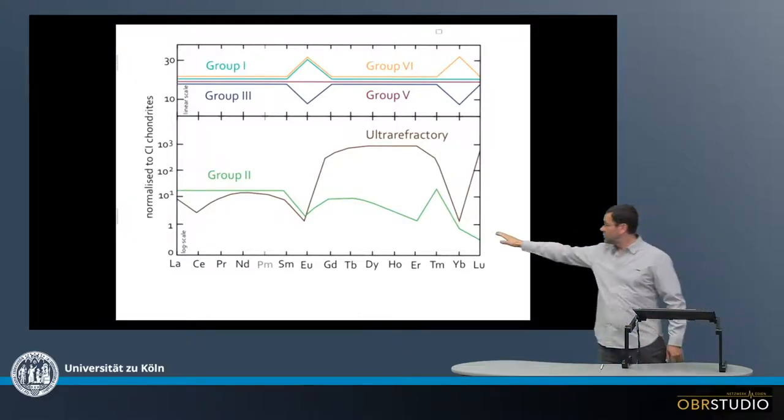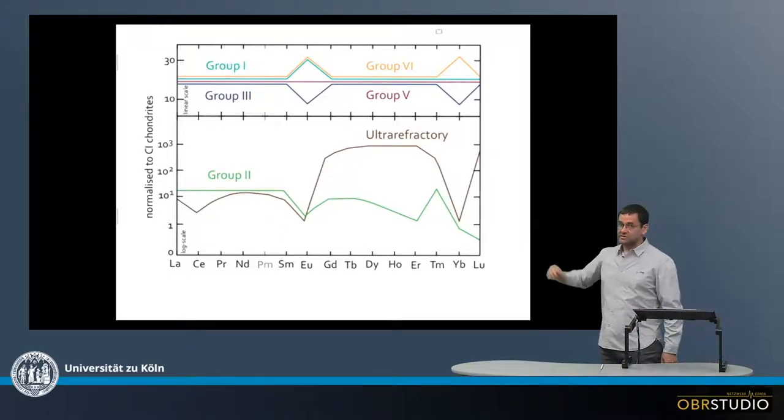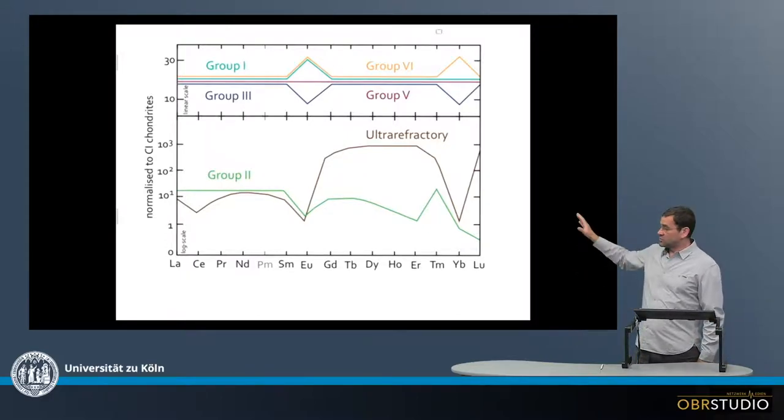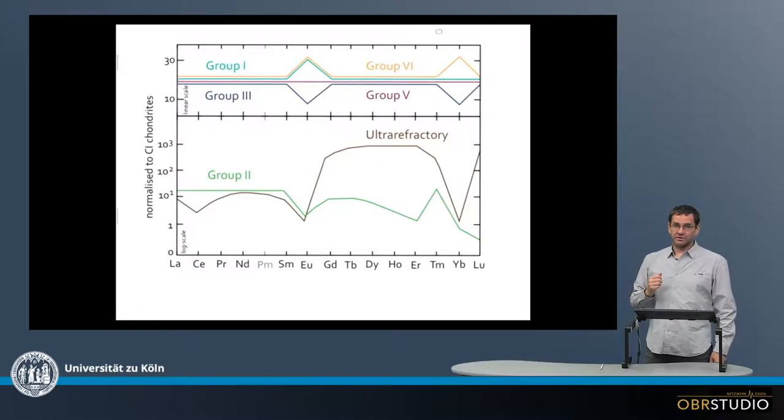This is a category plot. On the x-axis are the rare earth elements, and on the y-axis is the abundance of the rare earth elements in the CAIs. This is a normalized abundance, which means the concentrations of the rare earth elements in the CAIs divided by the concentrations of the rare earth elements in CI chondrites.